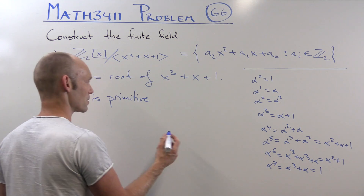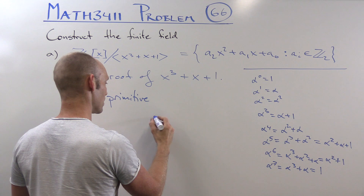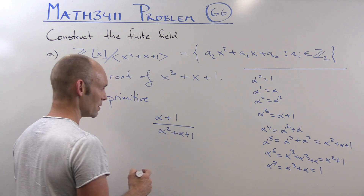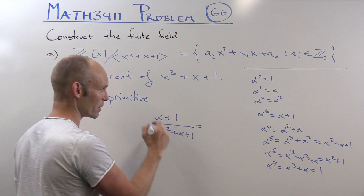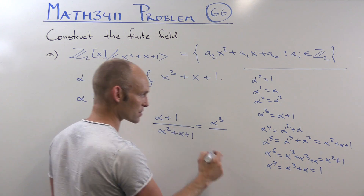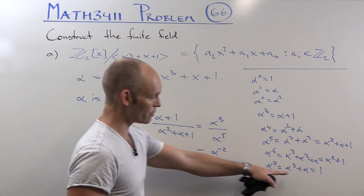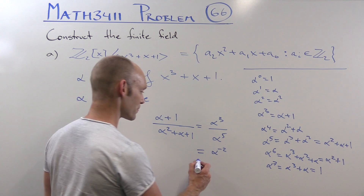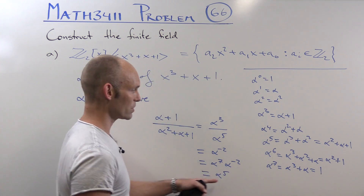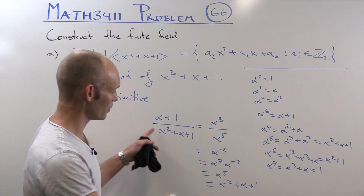For instance, we could use this table to calculate fractions. Let's say (α + 1) divided by (α² + α + 1). Well, α + 1 is α³ from the table, and α² + α + 1 is α⁵. So that's α³ ÷ α⁵ = α^(3−5) = α^(−2). Multiplying by 1 = α⁷ gives α^(7−2) = α⁵, which equals α² + α + 1. These calculations are really easy once you've got a table like this.